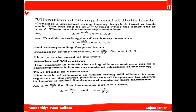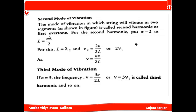The manner in which the string vibrates and gives rise to standing waves is known as the mode of vibration. The first mode of vibration is when the string vibrates in one segment — this is the lowest possible natural frequency, called the fundamental mode or first harmonic, where L = λ₁/2. The second mode of vibration is when the string vibrates in two segments, called the second harmonic or first overtone, where n = 2 and L = λ/2.